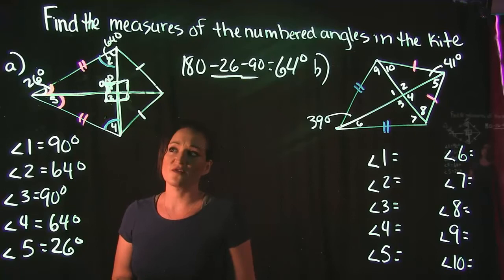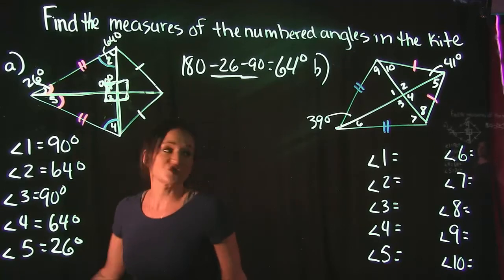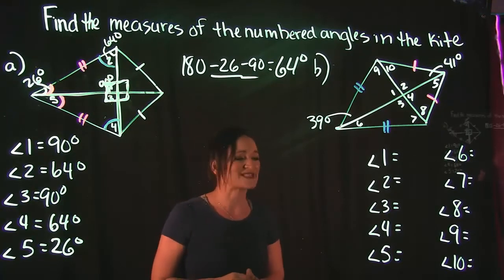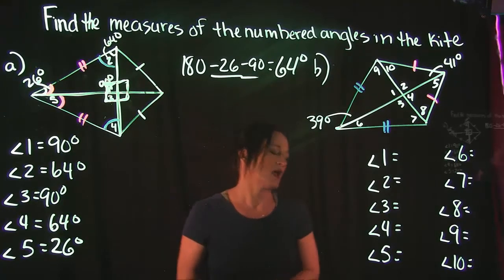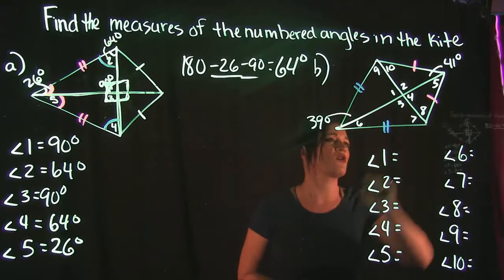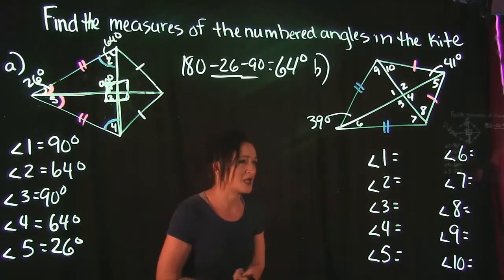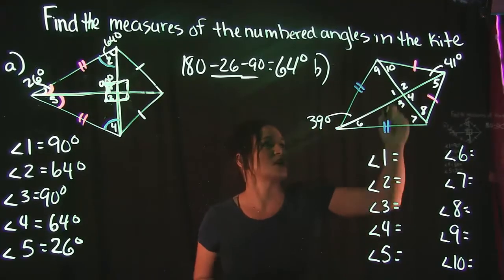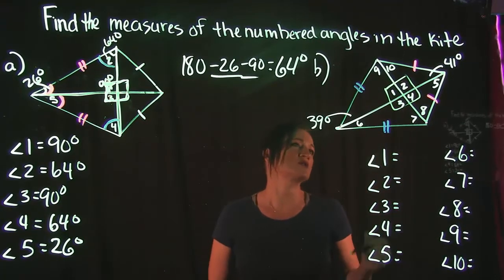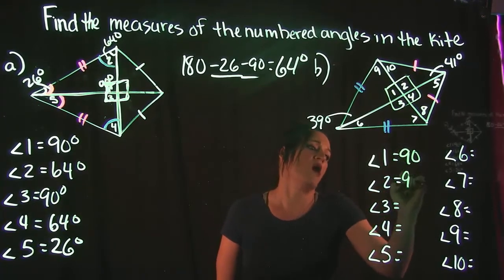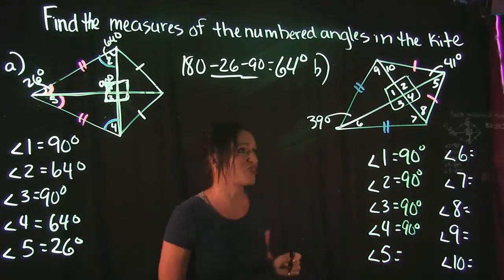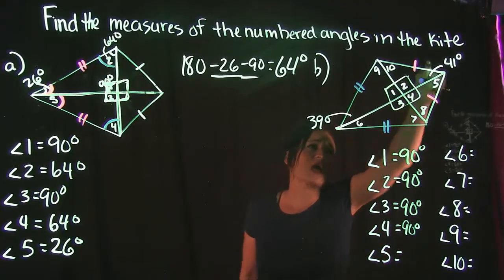Example B has a lot more missing information — 10 angles to figure out. We're given that the bottom angle is 39° and the top angle is 41°. Let's start easy: the four angles at the center intersection are all 90°, so angles 1, 2, 3, and 4 are all 90°.